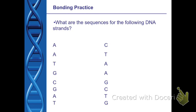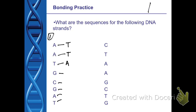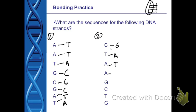Let's practice: given one strand of DNA, what would the complementary strand be? A always pairs with T, so an A on one strand means a T on the other. C pairs with G, G pairs with C, A pairs with T, and T pairs with A. For example: G-T-A-A-T-A-G-C-C-T-G pairs with C-A-T-T-A-T-C-G-G-A-C.